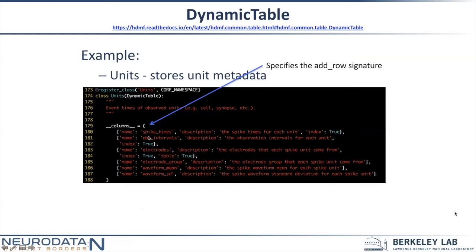The name key in those dictionaries defines the name of the column, and description provides a description of what that column is. This is required as part of the standard for storing appropriate metadata with datasets.